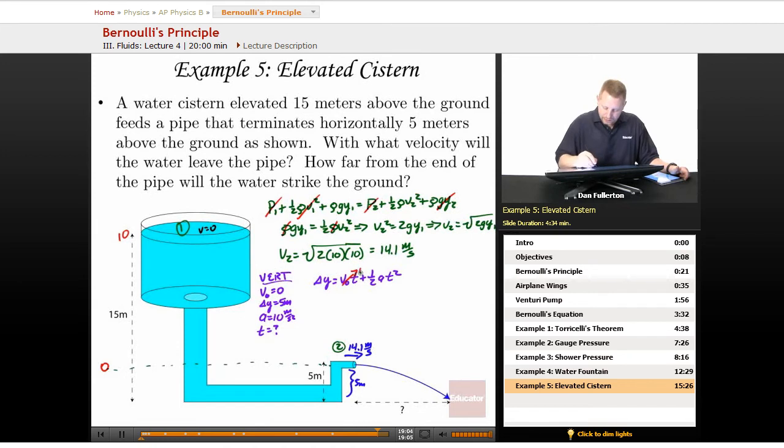But again, v initial is 0, so that term goes away. T then becomes square root of 2 delta y over a, or square root of 2 times 5 over 10, or 1 second.